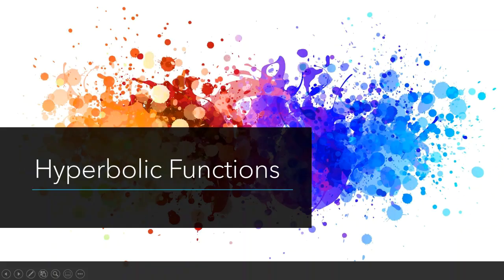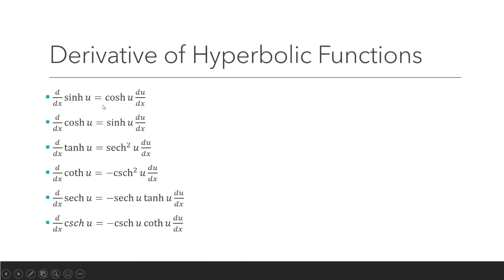These are the derivatives of the hyperbolic functions. The derivative of hyperbolic sine is equivalent to positive hyperbolic cosine times du/dx, and the derivative of hyperbolic cosine is equivalent to positive hyperbolic sine times du/dx. Here is the full list of equivalent derivatives of the hyperbolic functions, and you have to familiarize yourselves with each one.